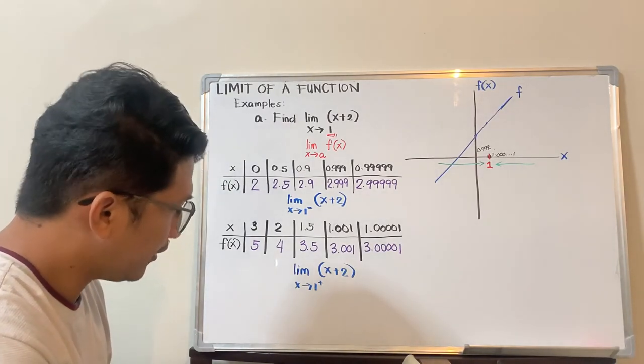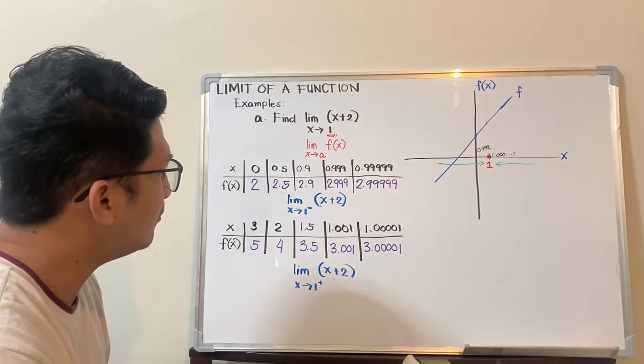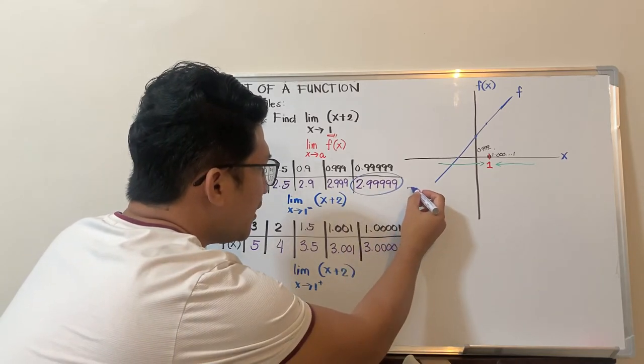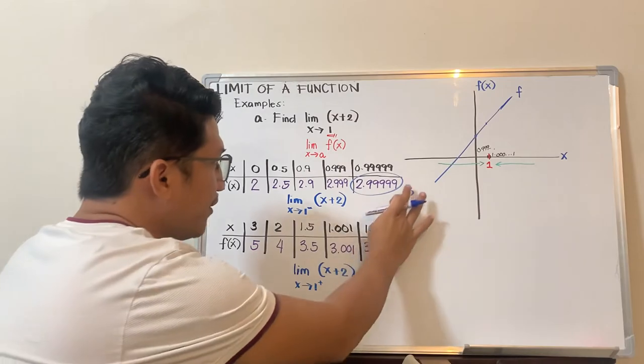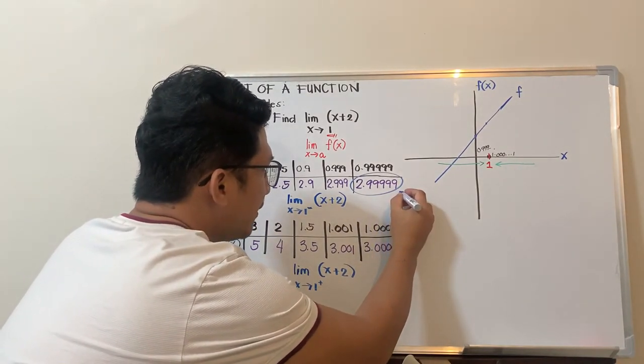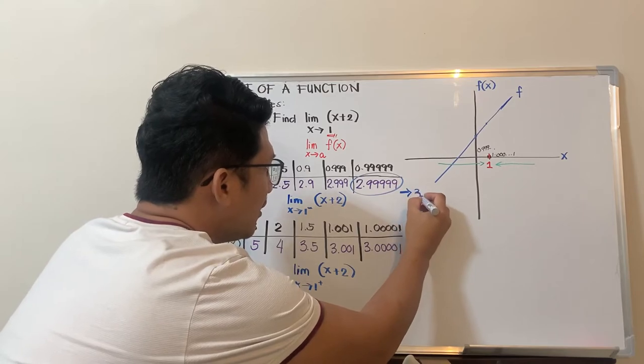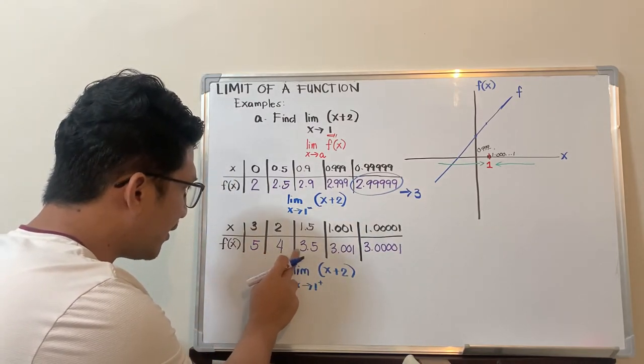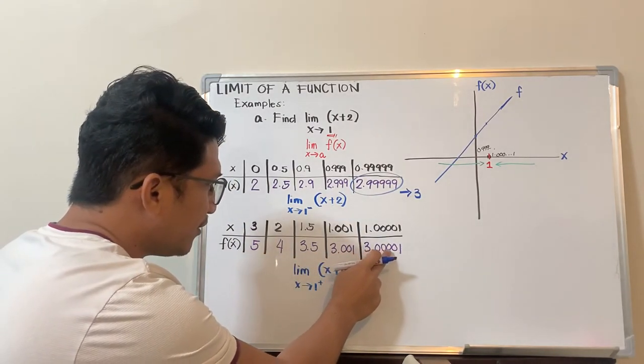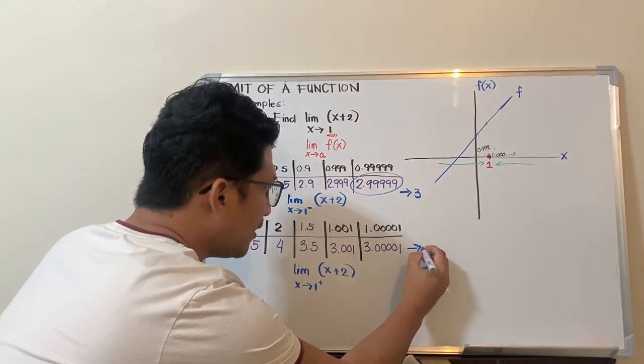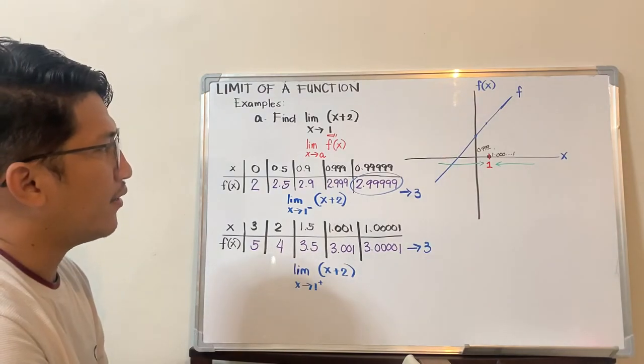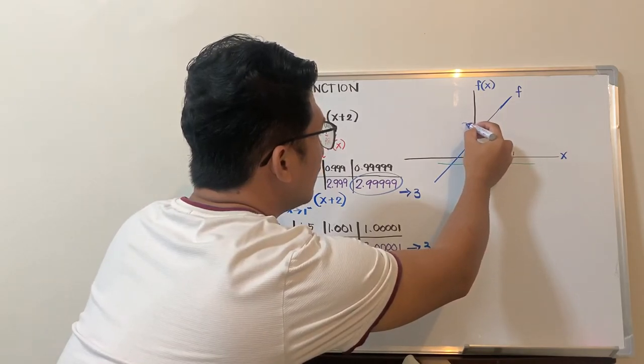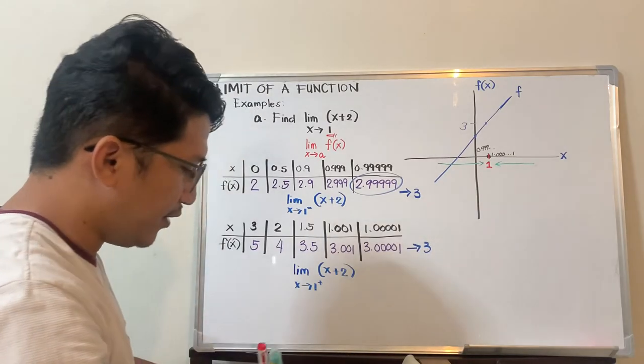If you try to notice the numbers, there's something very common—this number is approaching 3. It's approaching 3. And this number—5, 4, 3.5, 3.001, 3.0001—it's also approaching 3.